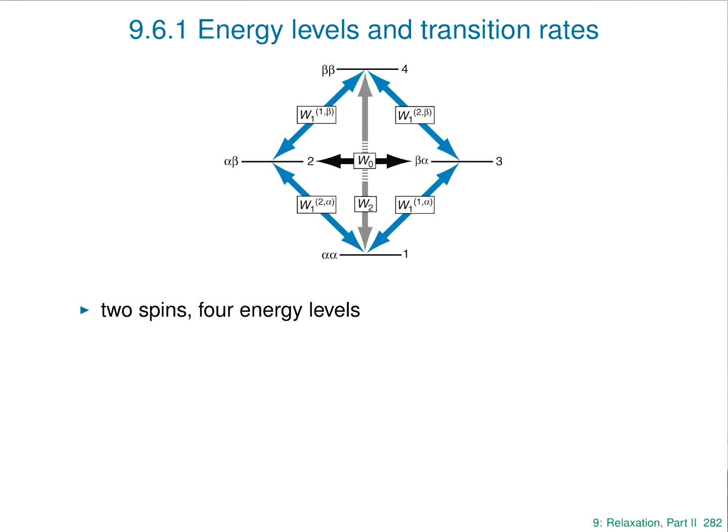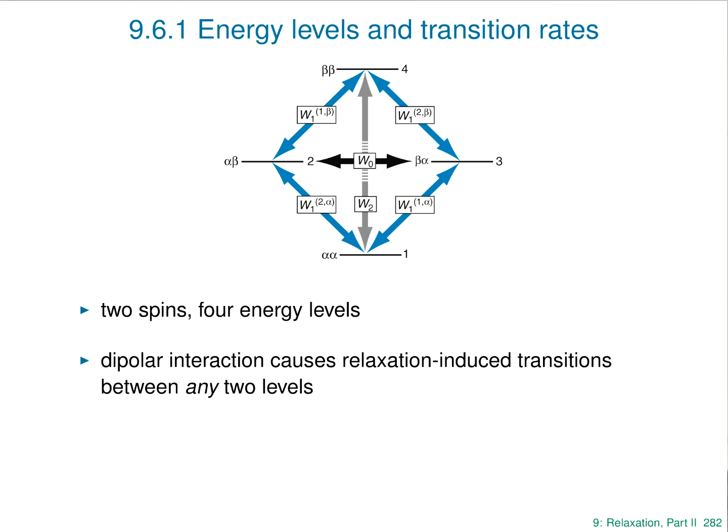Transition 1-3 is an allowed transition — one that you would see in the spectrum. But what we're interested in is whether relaxation processes can cause transitions between these energy levels. One of the special things about the dipolar interaction is it can cause transitions between any two of these energy levels: not only between 1 and 3, but also directly between 1 and 4, and directly between 2 and 3. Dipolar relaxation basically connects all of these energy levels together, and it's that special feature which gives dipolar relaxation some unusual qualities.